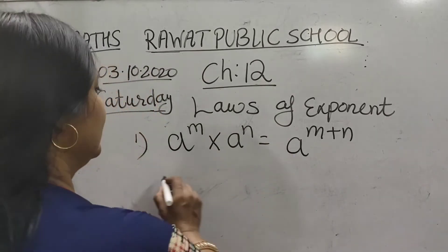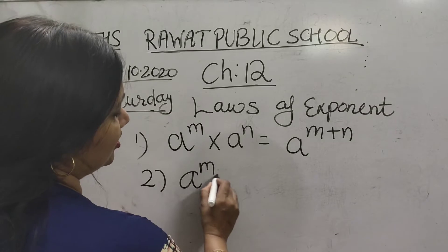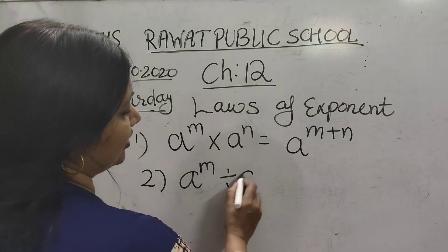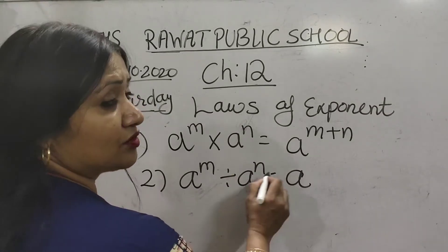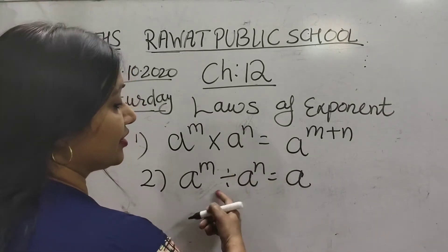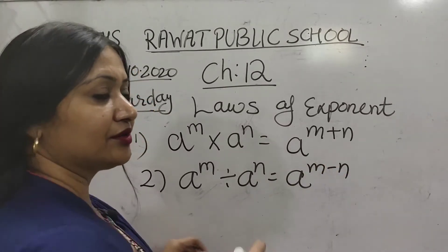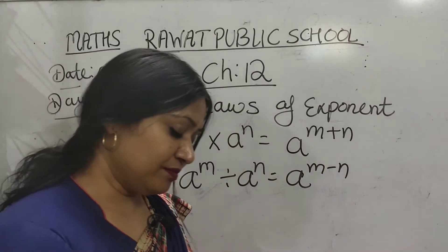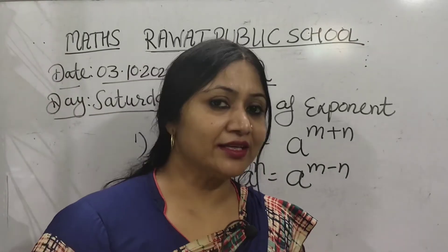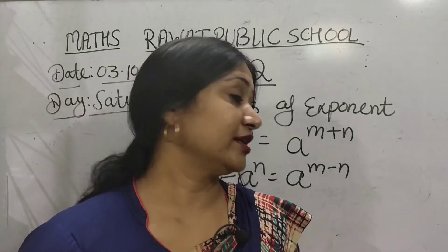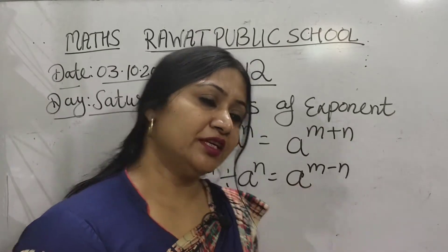Second law: a raised to power m divided by a raised to power n is equal to a raised to power m minus n. When a^m divided by a^n, the result is a^(m−n).